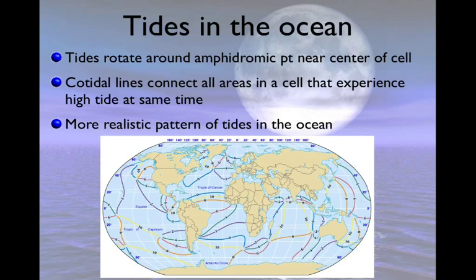When we take into account cotidal lines and amphidromic points, we get a more realistic pattern of tides in the ocean. The North Atlantic one is a nice, simple gyre. You can also see it works with another amphidromic point centered around Iceland, and there are even little tiny ones in the North Sea. The cotidal lines represent the wave crest of the tide rotating around the amphidromic point, and every place along a given line experiences high tide at approximately the same time.